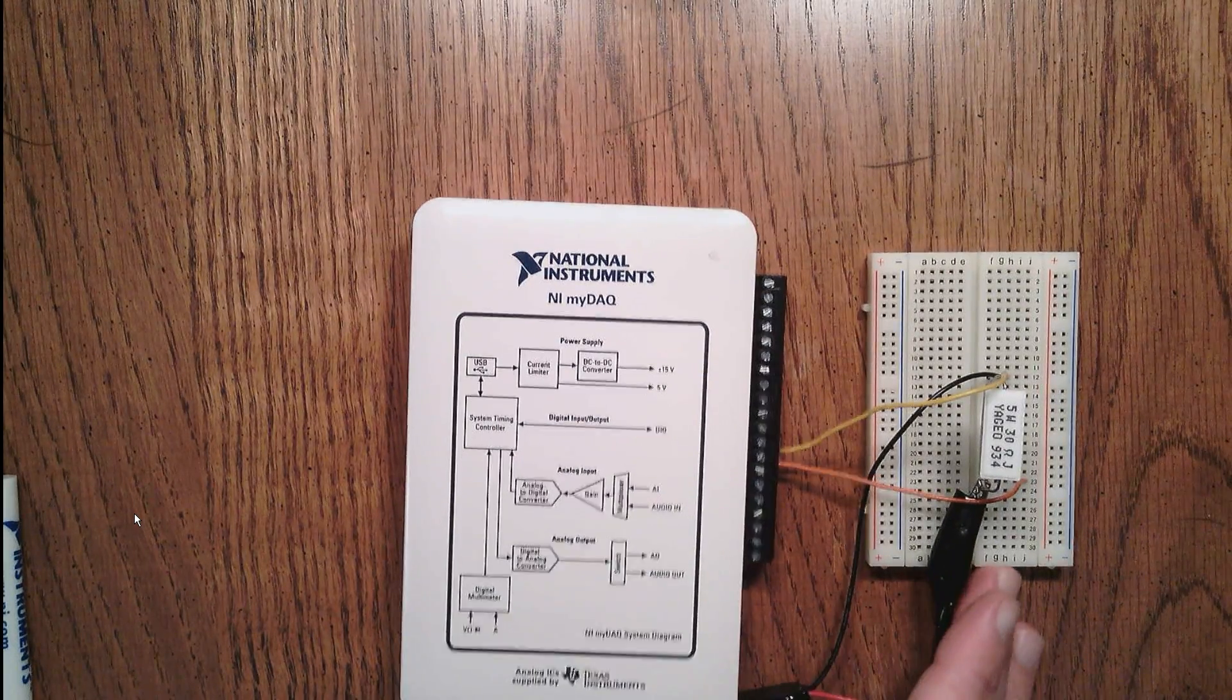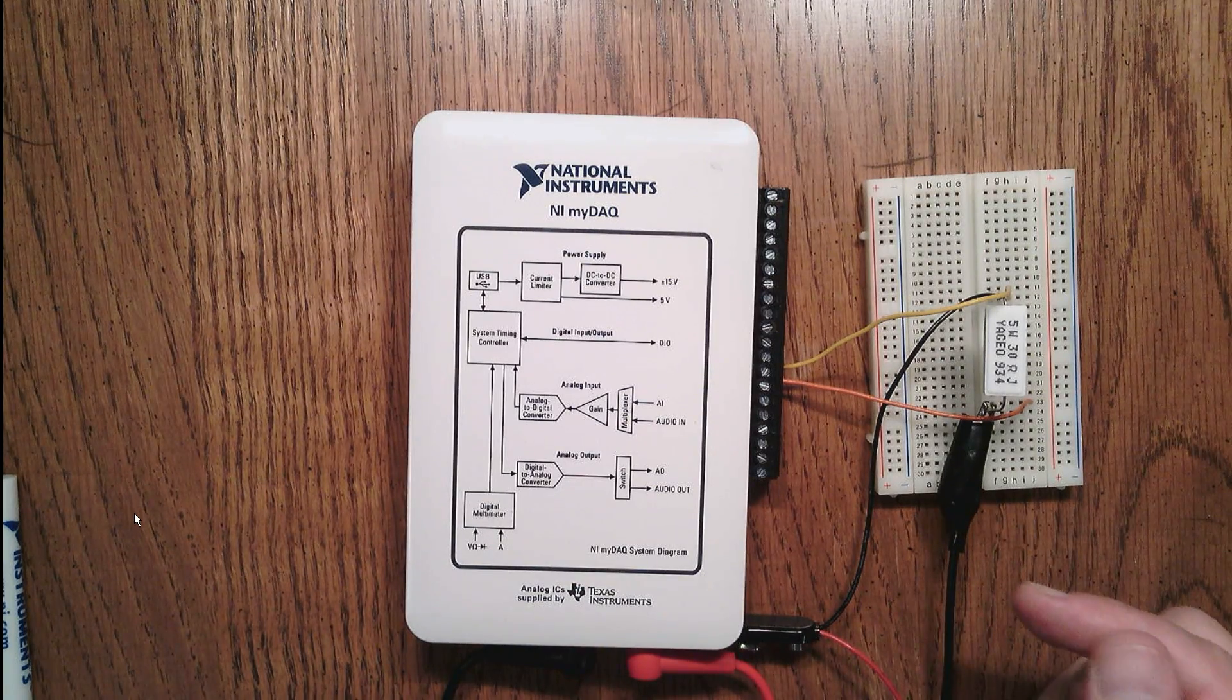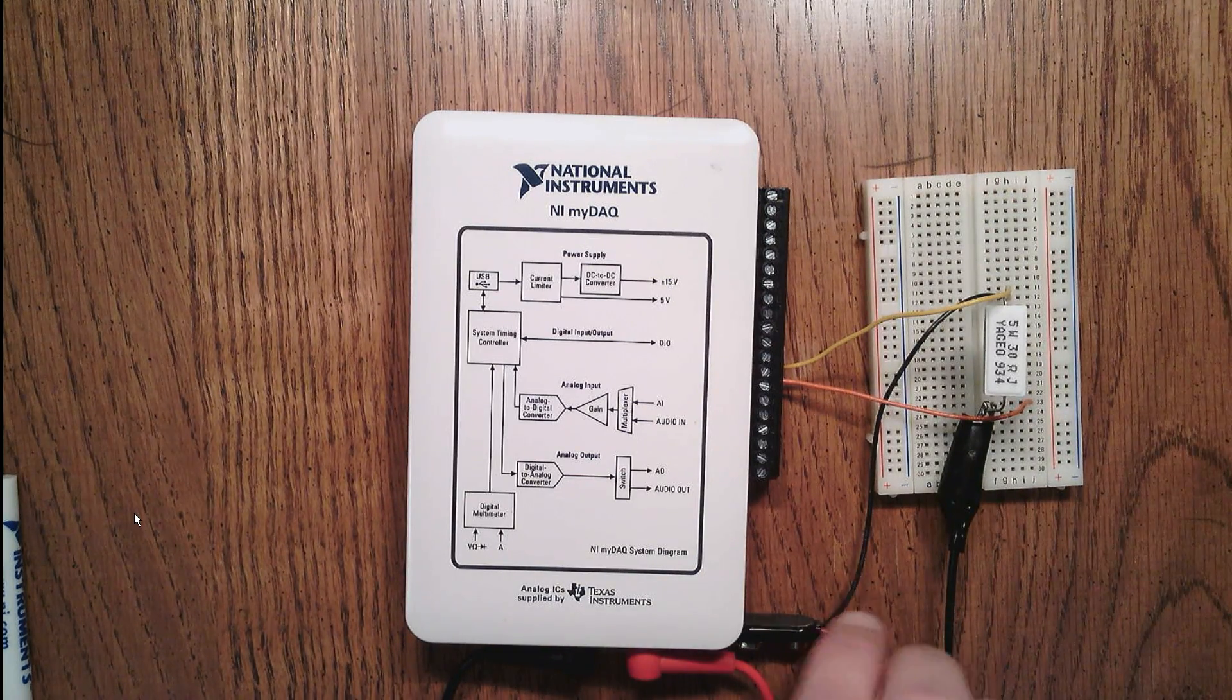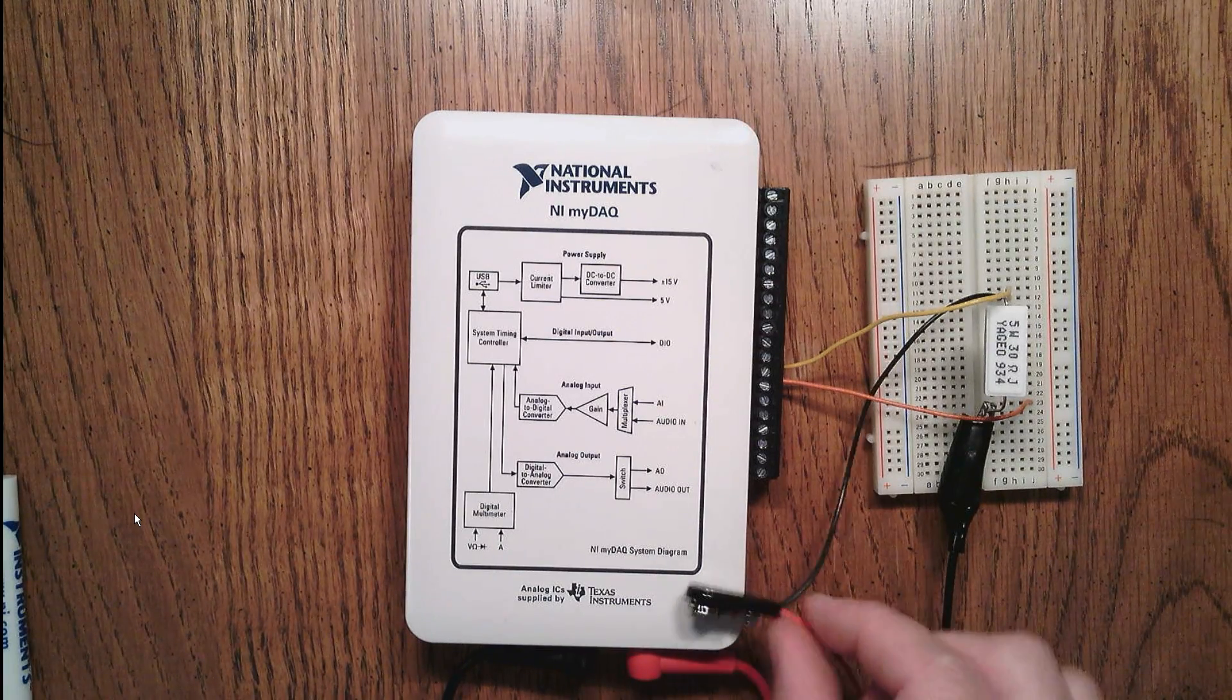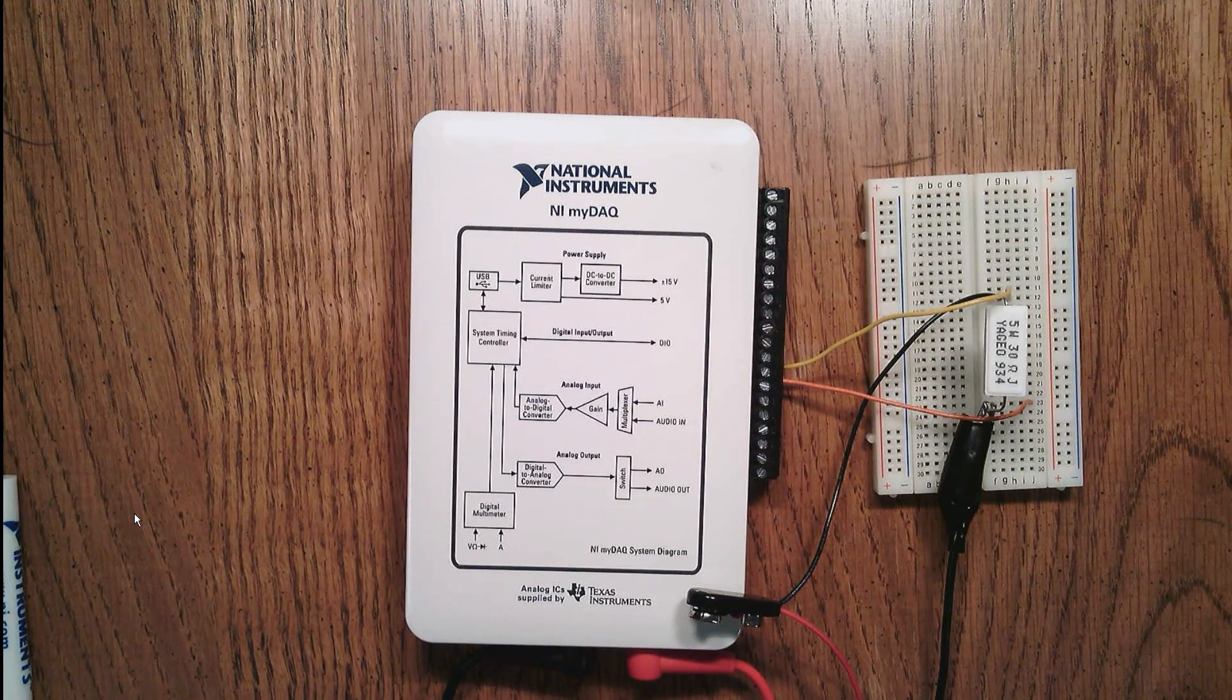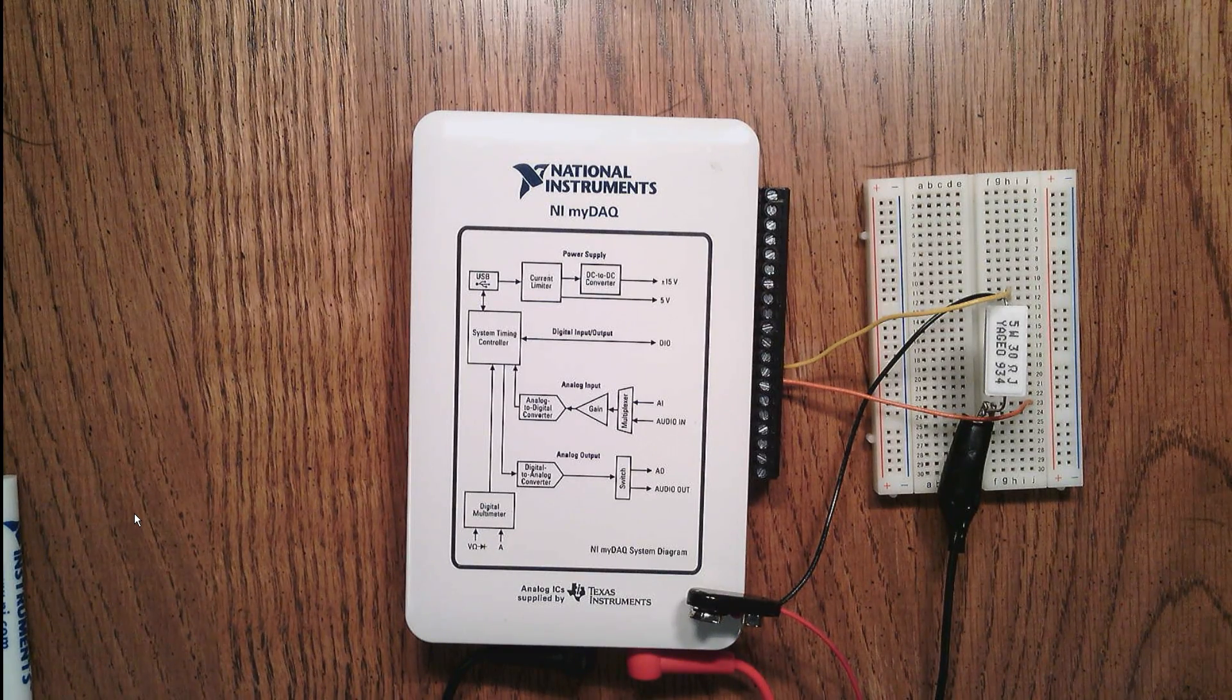With those connections now made, we are prepared to make measurements of both the current passing through the resistor as well as the potential that's developed across the resistor once we connect a battery to our 9-volt battery connector. In the next video, I'm going to show you how we can develop a LabVIEW program to capture and store all of that information.